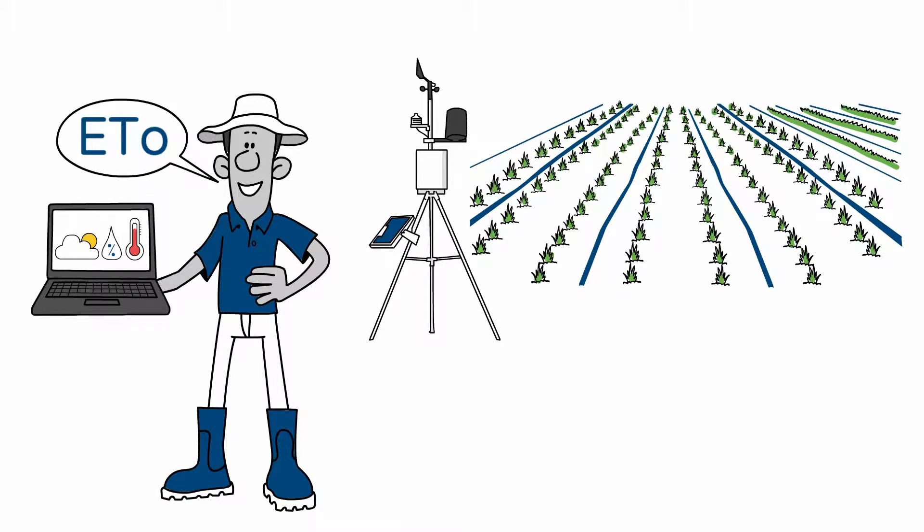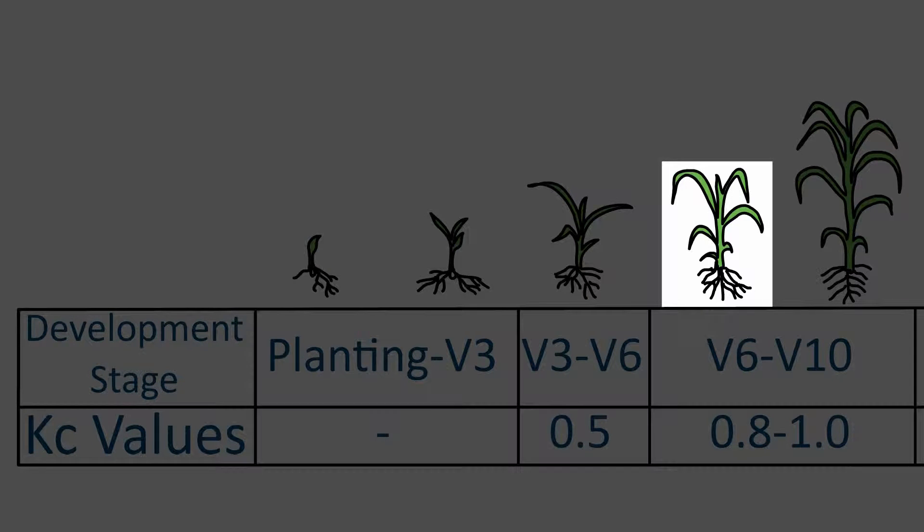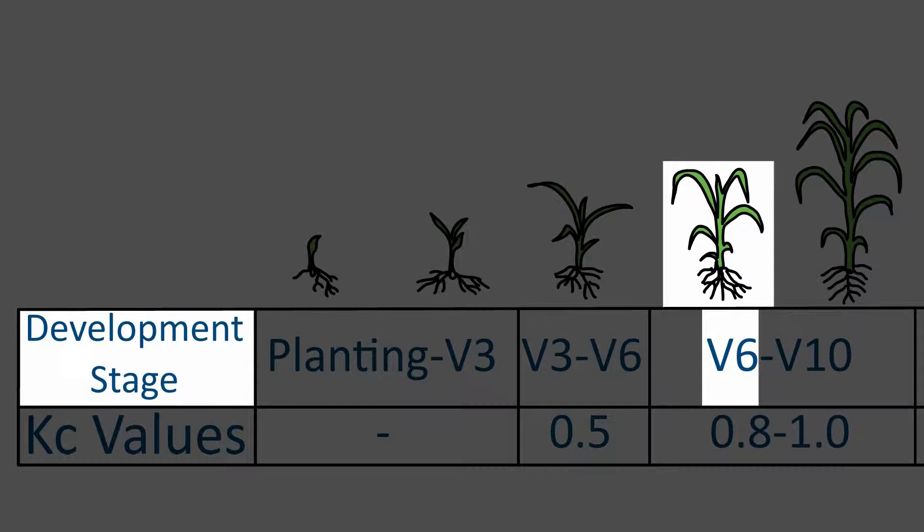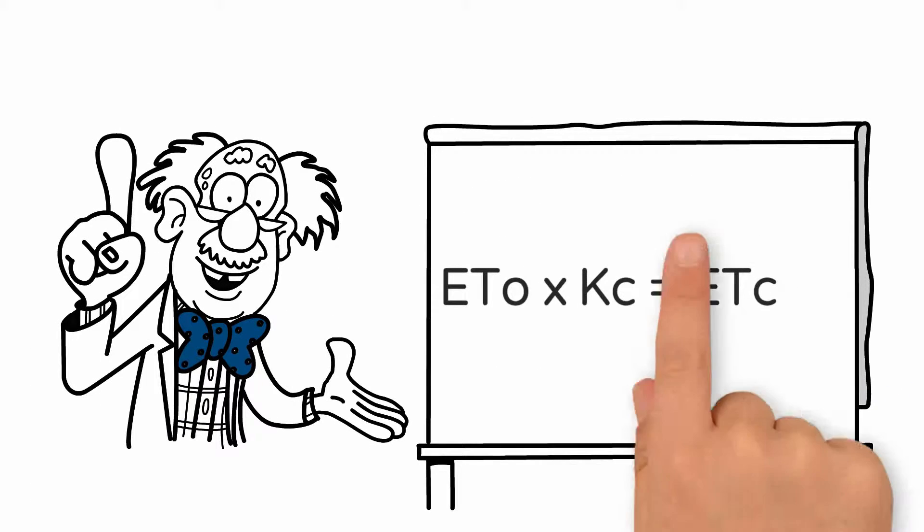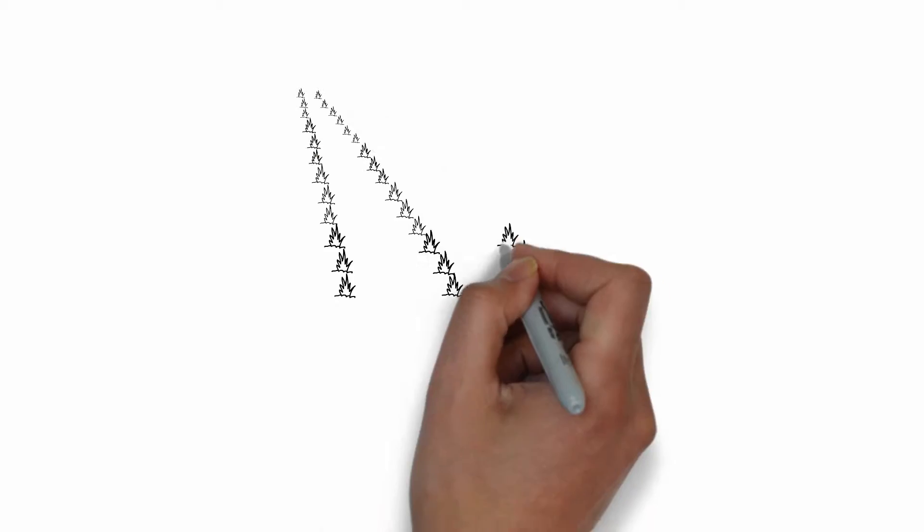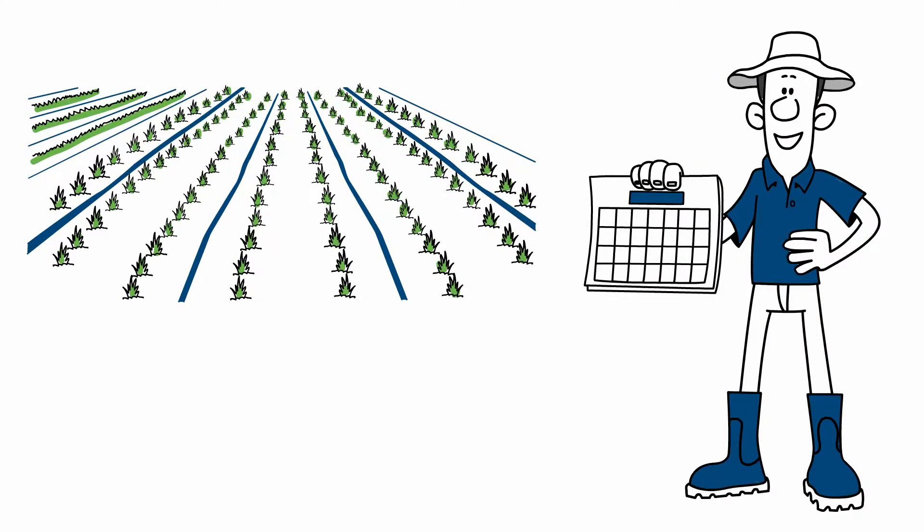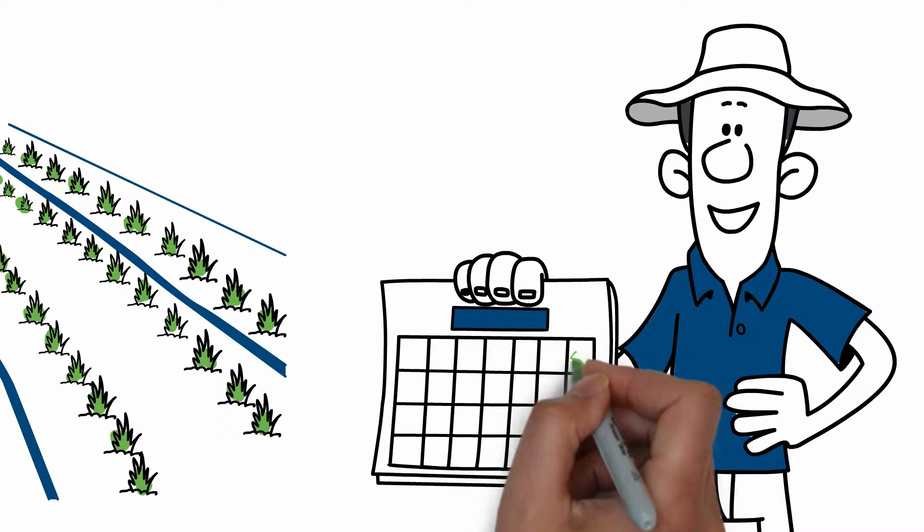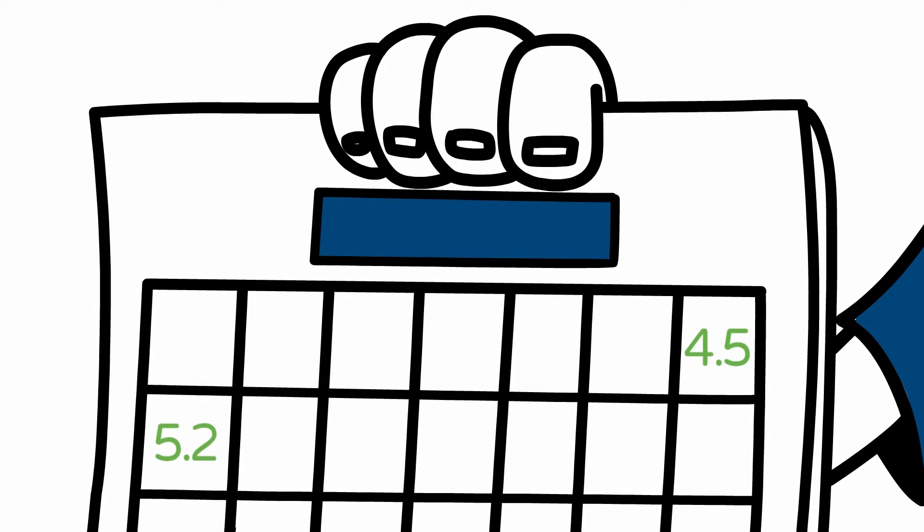So now, you only need to do the math. Let's say, the crop on your farm is at the V6 stage. This means the KC value is 0.8. Yesterday, your field consumed 4.5 millimeters of water. Now, some crops are not irrigated daily, but rather in a two- or three-day interval. In this case, you will sum the ETC of the last two or three days since the last irrigation and apply the accumulated amount.